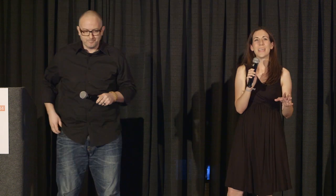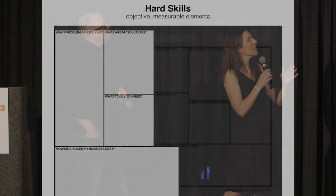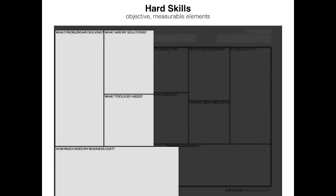Let's break it down. The tool is divided into your hard skills on the left and your soft skills on the right. Your hard skills are your more objective, measurable categories: What problem are you solving? What are your solutions? What tools do you need, and how much does it cost to run your business?